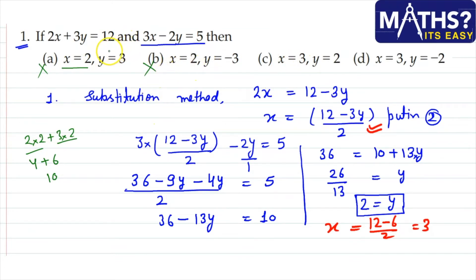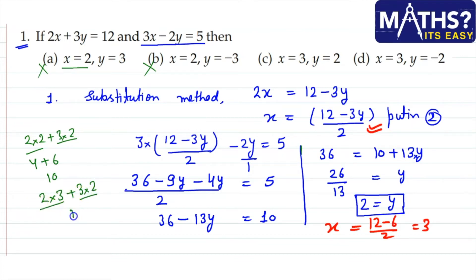This is the easy way to find the answer. Let's verify x=3, y=2 in the first equation: 3×3=9, 2×3=6, 3×2=6, and 6+6=12. This value is satisfied. Now let's check in the other equation: 3×3=9, minus 2×2=4, giving 9-4=5. Yes, this is satisfied too.